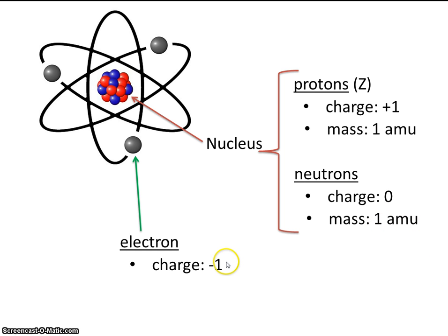The electron has a charge of minus one, or of negative one, and it has a mass of zero. So the electron is essentially massless.